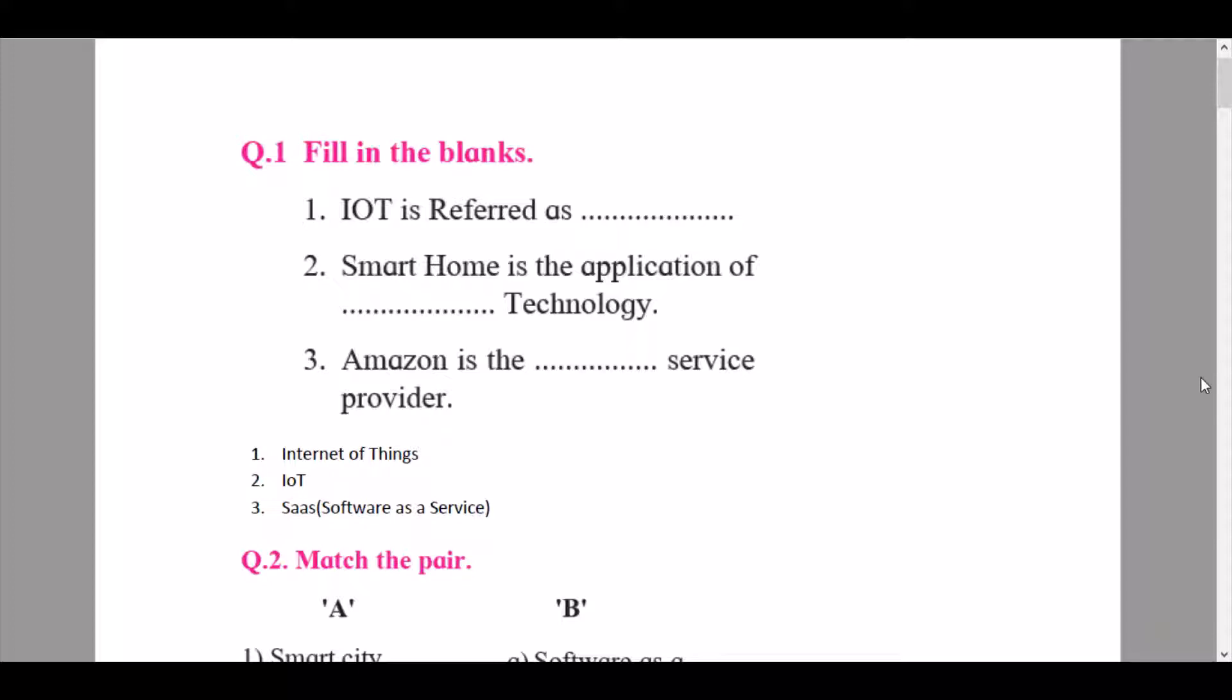Let's start here with question number one, fill in the blanks. Question number one says IoT is referred as... so the answer here is IoT is referred as Internet of Things. Then we continue to question number two: Smart home is the application of technology. So here, smart home is the application of IoT technology, Internet of Things.